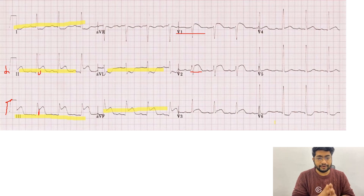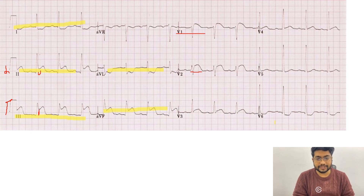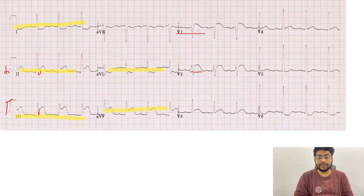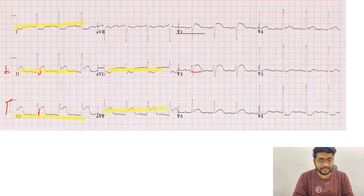When we see two or three criteria being fulfilled, we perform the RV leads ECG — the right ventricular leads. To do that, we reverse the precordial leads: if V1 was on the right side of the sternum, we now put it on the left side, and V2 through V6 are placed on the right side instead of the left side as in the standard ECG. The ECG obtained by this method is called the RV leads ECG.